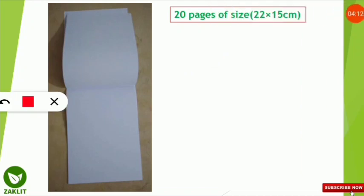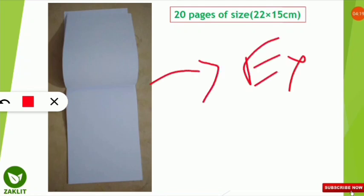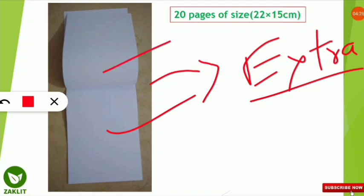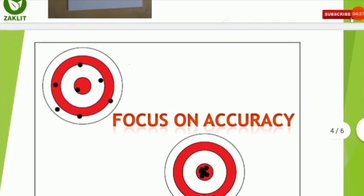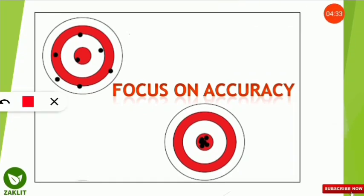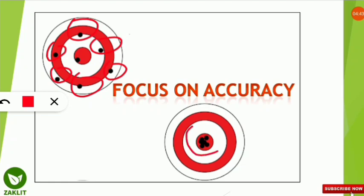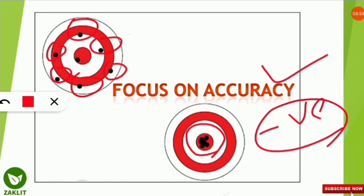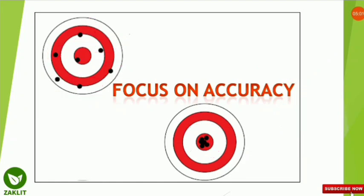You should ask the examiner whether they will be providing extra scribble pads so you can manage your rough work accordingly. The third tip is to focus on accuracy. In GATE, accuracy matters a lot. Don't attempt questions randomly just to avoid leaving them blank, as that increases negative marking. Focus only on questions you are confident about to gain positive marks and minimize the chances of negative marking.